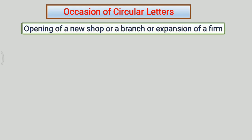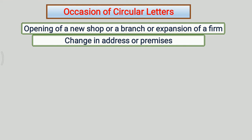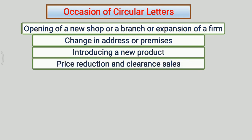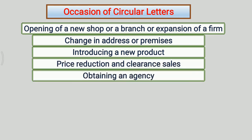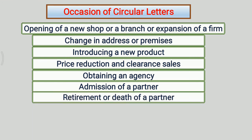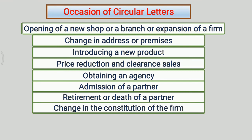Occasions of Writing Circular Letters: First is opening of a new shop, branch, or expansion of a firm. Next, change in address or premises. Next, introducing a new product. Next, price reduction and clearance sales. Next, obtaining an agency. Next, admission of a partner. Next, retirement or death of a partner. And, change in the constitution of the firm.